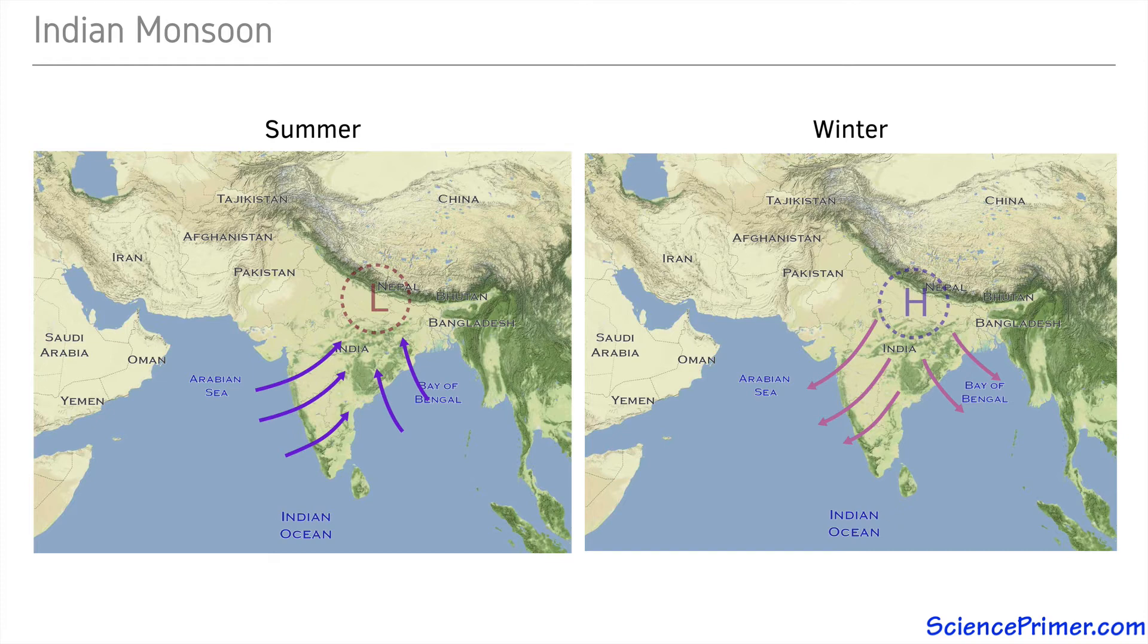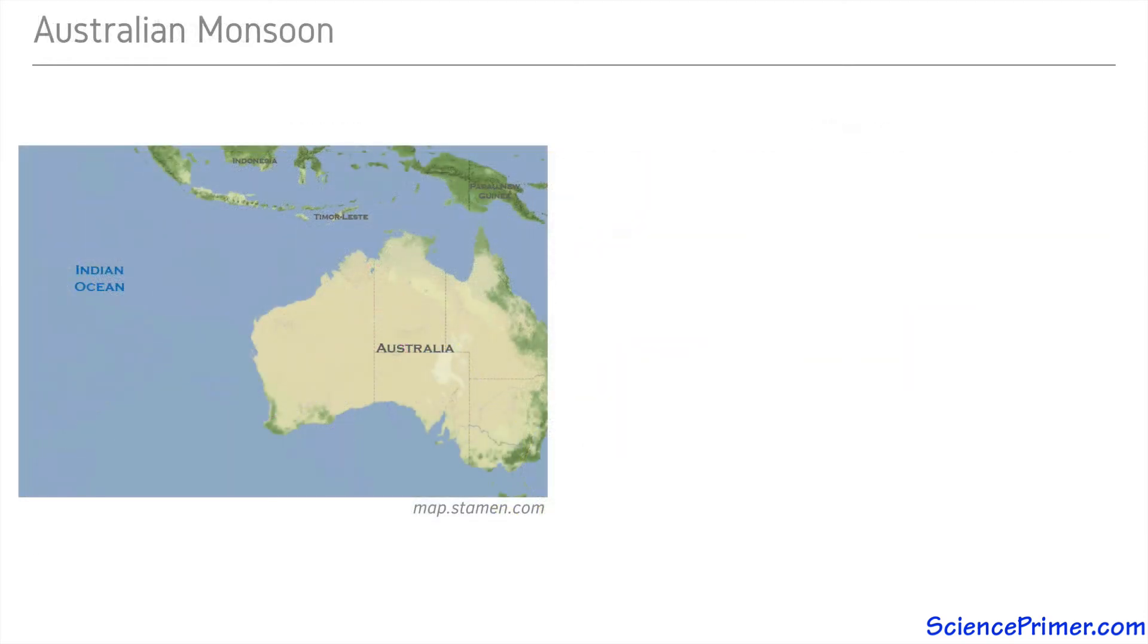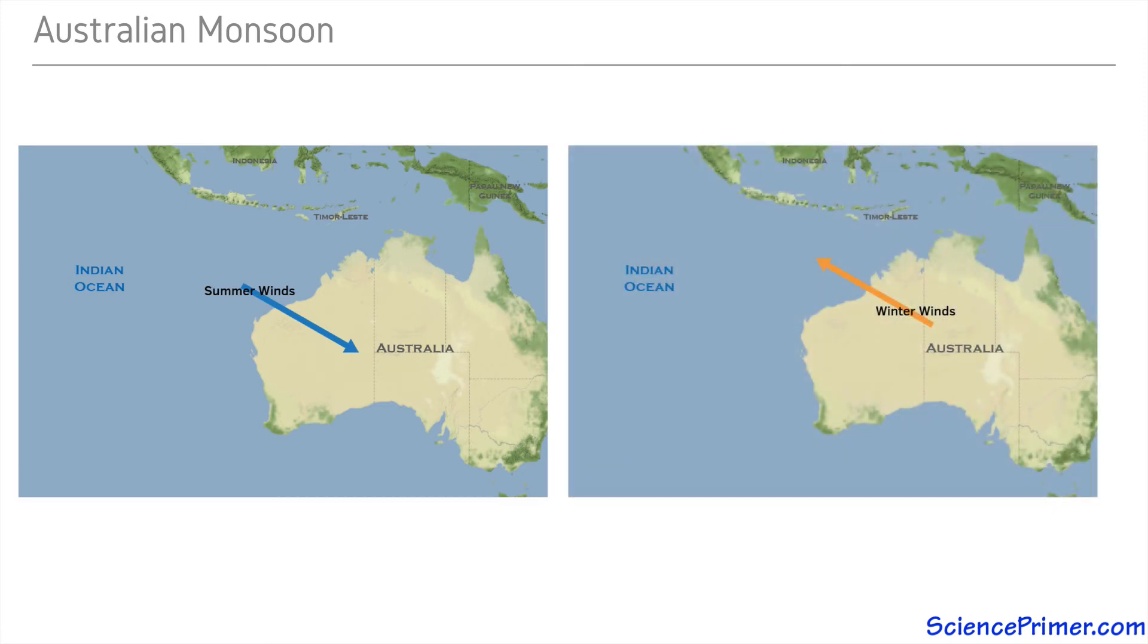Western Australia, on the other side of the equator, also has monsoon seasons. In the Australian summer, which runs from November to April, prevailing winds blow from the west, bringing wet, stormy weather. In the winter, winds reverse direction, blowing offshore and creating drier conditions.